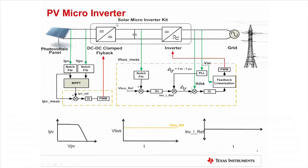This slide shows the solar micro-inverter kit which uses a clamped DC-DC flyback and a DC-AC inverter and illustrates the control scheme used. There are two control loops. First is the DC-DC flyback control loop which is responsible for maintaining the PV panel at the maximum power point. And second is the inverter control loop which feeds a clean and in-phase current into the grid while maintaining the DC bus voltage at a fixed value.